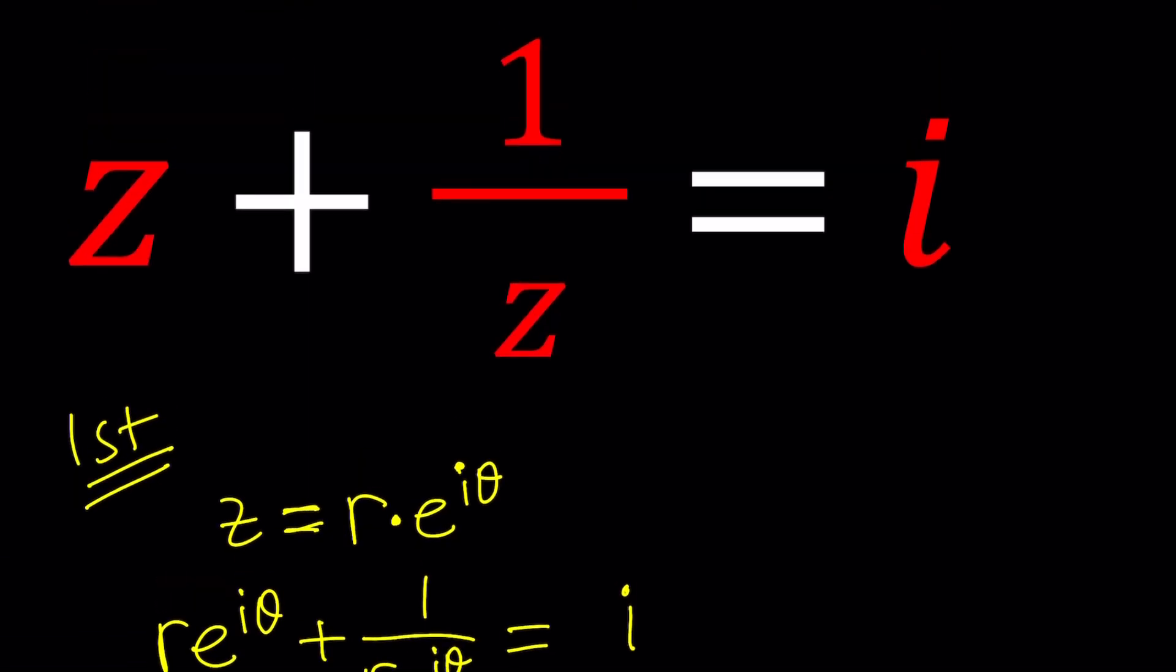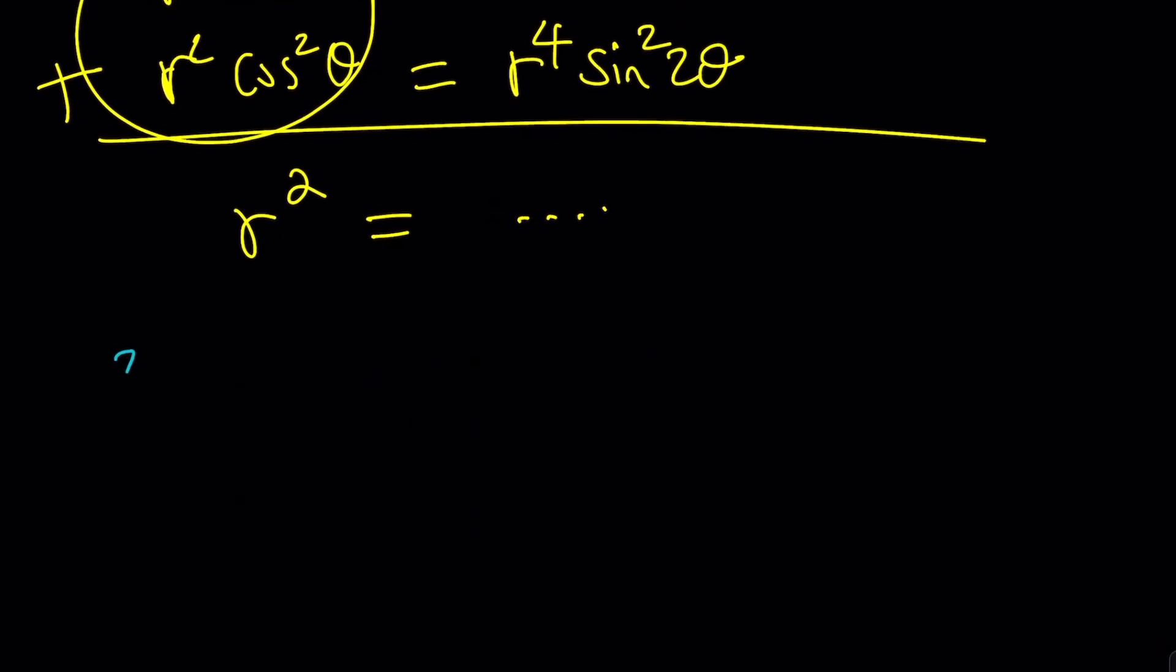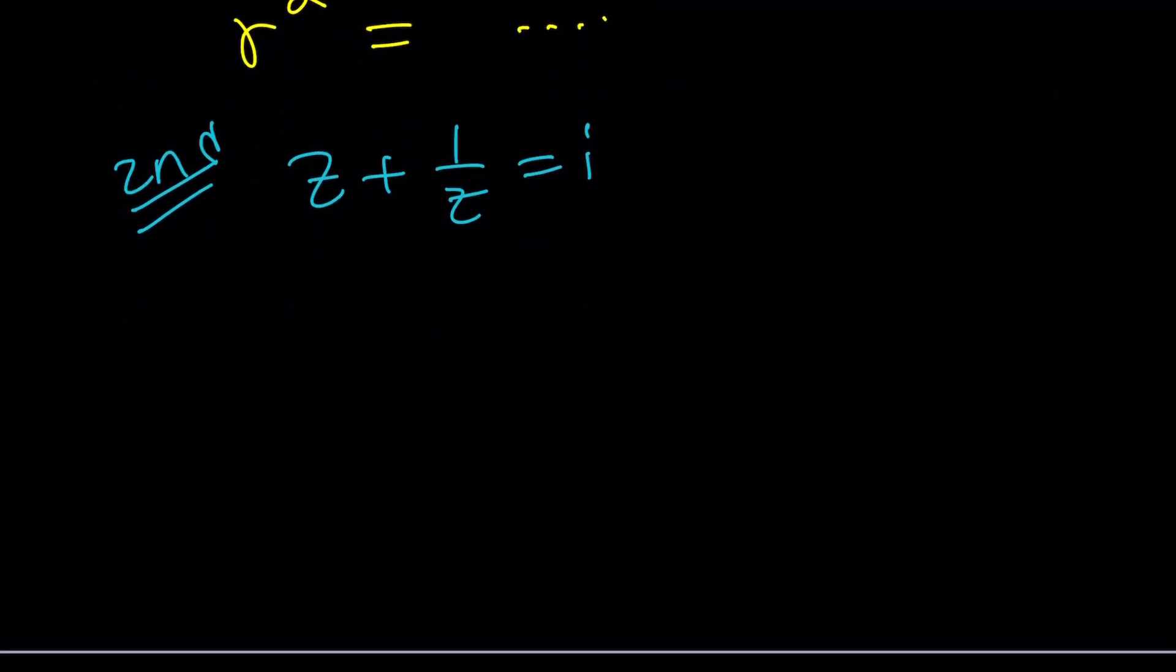Let's take a look at an alternative approach, which we should probably normally use. Here's my equation: Z plus 1 over Z equals i. And I'm going to multiply everything by Z. So it's going to give me Z² plus 1 equals iZ. And then I'll bring the iZ over here and turn this into a quadratic equation. How nice, right?